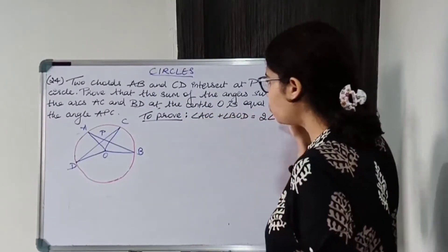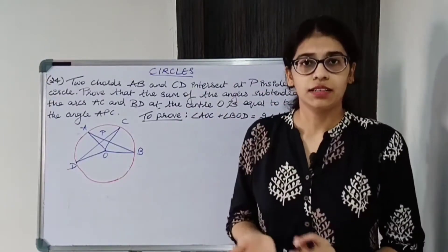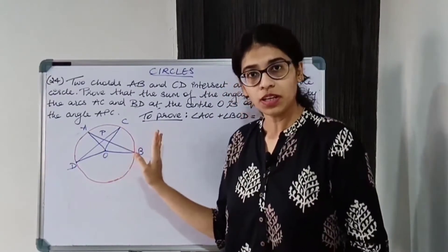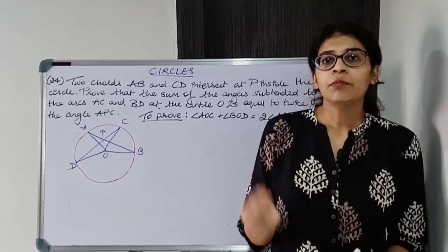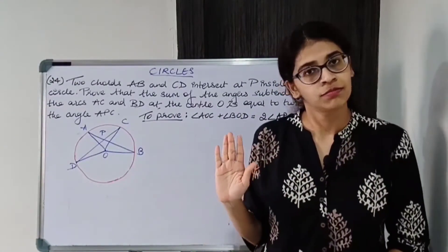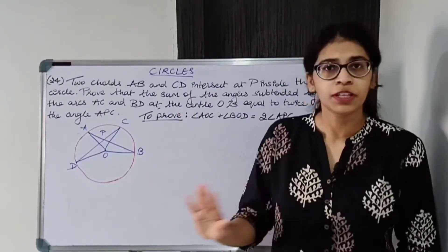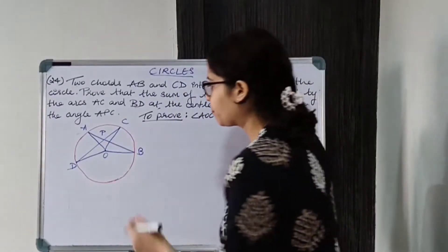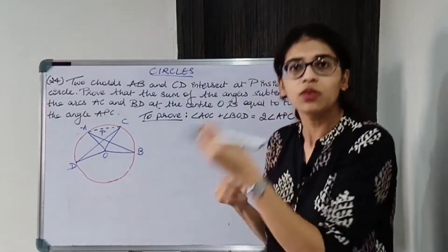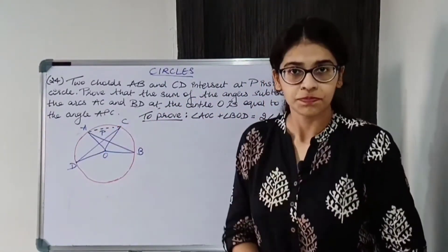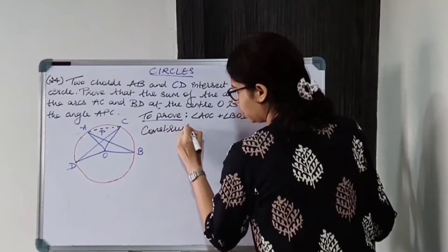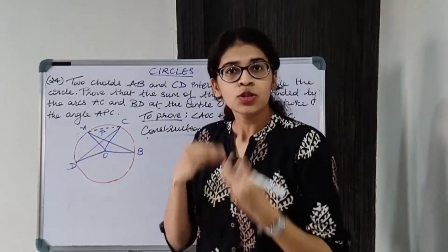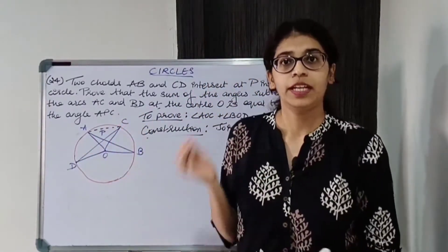Now, how do we relate AOC, BOD, and APC? APC is not an angle on the circumference — it is inside the circle. It is not at the center either. So the arcs property — angle subtended at circumference versus angle subtended at center — cannot be used directly here. What we can do is consider triangle APC. Let us join AC as a construction.